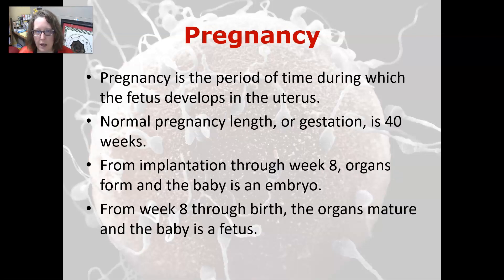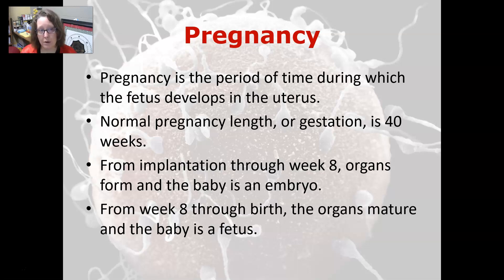Pregnancy is the period of time during which the fetus develops in the uterus. Normal pregnancy length or gestation is around 40 weeks. From implantation through week eight, all the organs form and the baby is called an embryo. From week eight through birth, the organs mature and the baby is called a fetus. Often a woman can find out she's pregnant as early as week six or seven, but by week eight the baby is pretty much fully formed with all organs present, and then everything matures from week eight onward through birth.